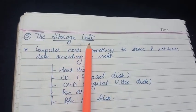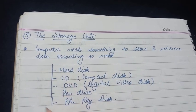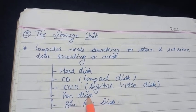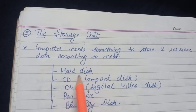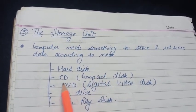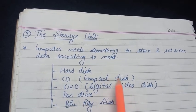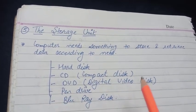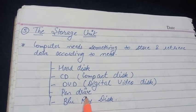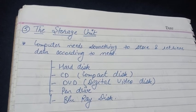In this storage unit we will discuss about the different storage devices that are used to store data permanently. The first we have is the hard disk, a very important part. Second we have is the CD, that is compact disk. Third we have is the DVD, that is digital video disk. Fourth is the pen drive and fifth we have is the Blu-ray disk.